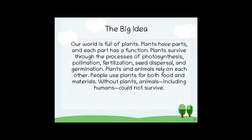Here's the big idea. Our world is full of plants. Plants have parts and each part has a function. Plants survive through the processes of photosynthesis, pollination, fertilization, seed dispersal, and germination. Plants and animals rely on each other. People use plants for both food and materials. Without plants, animals, including humans, could not survive.